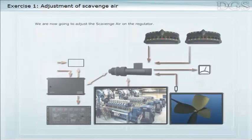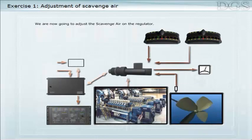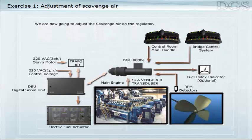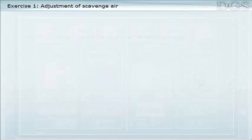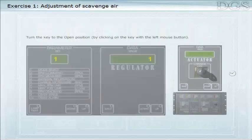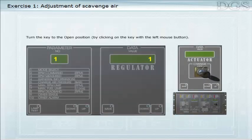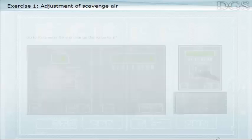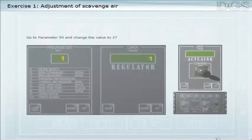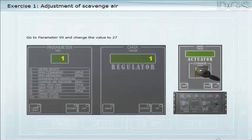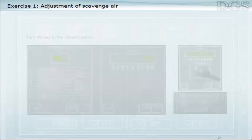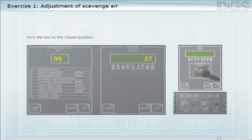We are now going to adjust the scavenger on the regulator. Turn the key to the open position by clicking on the key with the left mouse button. Go to parameter 99 and change the value to 27. Turn the key to the closed position.